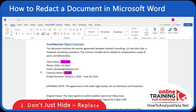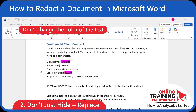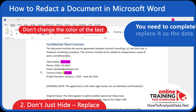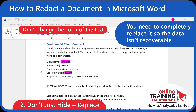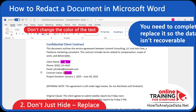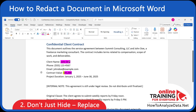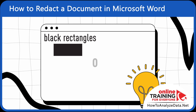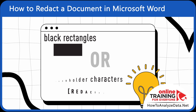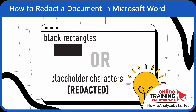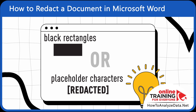In the next step, let's replace sensitive data with black bars or placeholder text. To redact text, don't just change the color of the text — you need to completely replace it so the data isn't recoverable. There are two safe ways to do it: replace it with black rectangles, or replace the content with placeholder characters like [redacted] in square brackets.